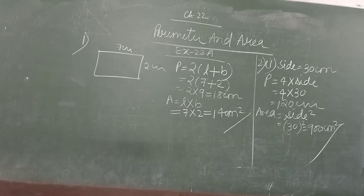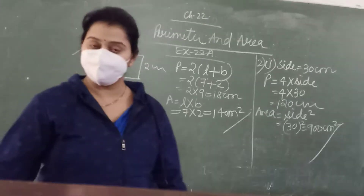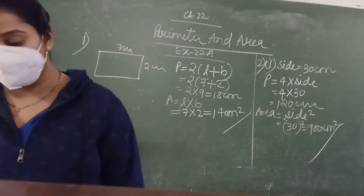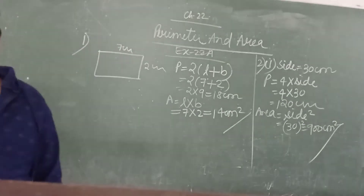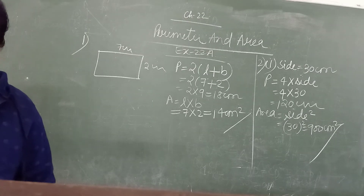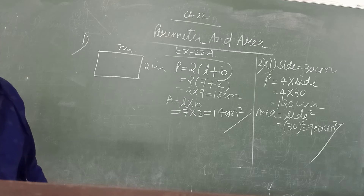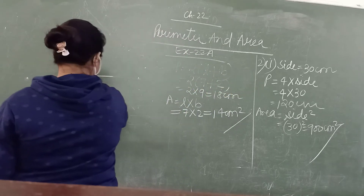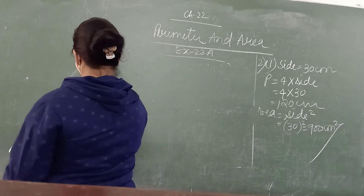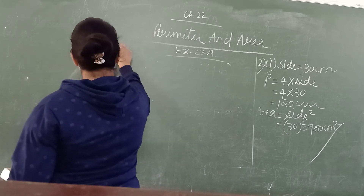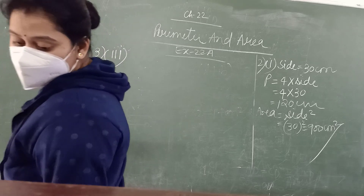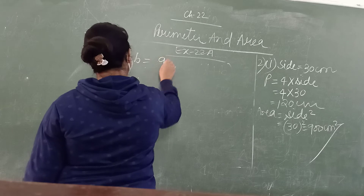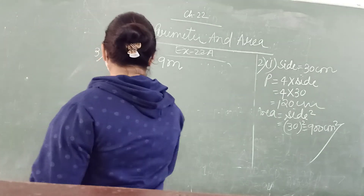Next, we have question number 3. In the third question, we have a table in which length and breadth are given in the first and second parts — you can get area and perimeter the same as question one. In the third part, we have breadth and perimeter. And in the fourth part, we have breadth and area. We have to get the length. I am going to explain the third part. It is given that the breadth is 9 metres and the perimeter is 50 centimetres.